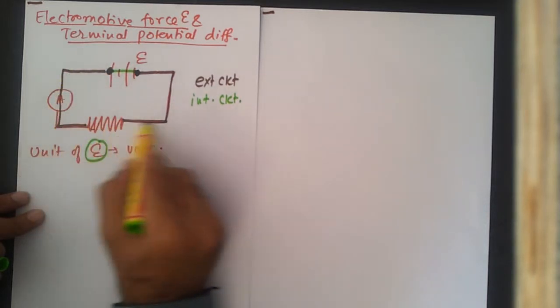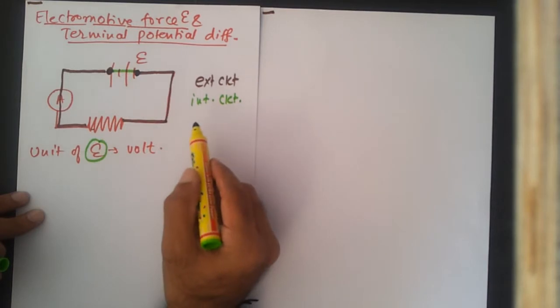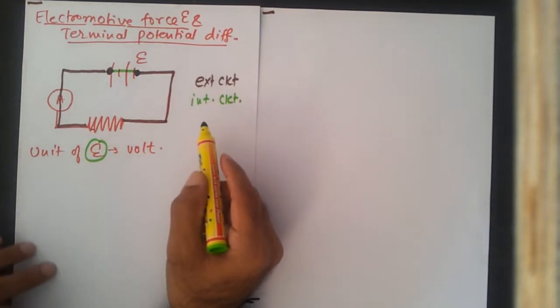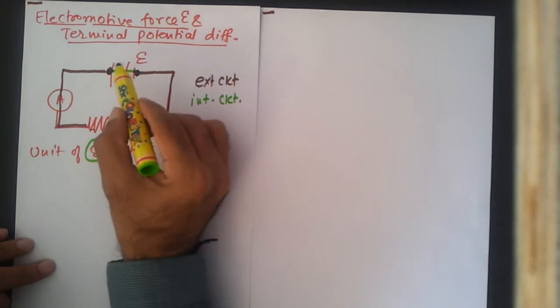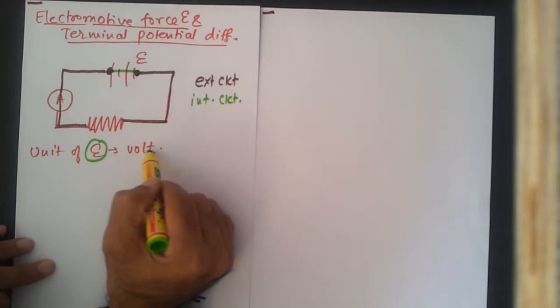Let me repeat this. It's very important to understand epsilon. Epsilon is basically energy. If you remember, volt is joule per coulomb, which is energy per unit charge. So when we say epsilon volts, it means the amount of energy used to make unit charge move into the circuit.